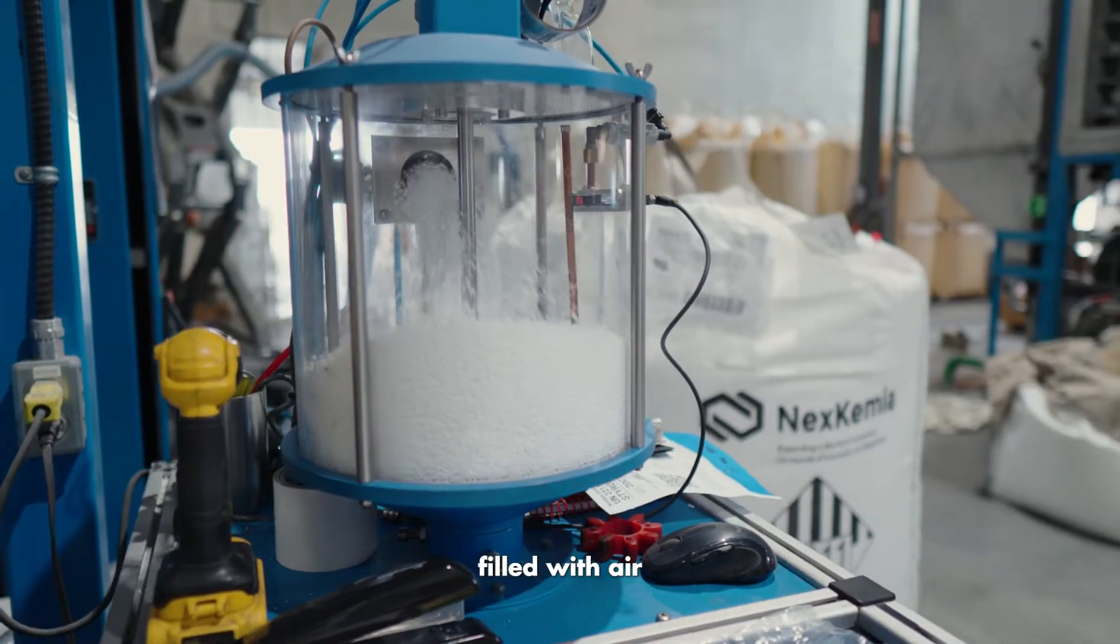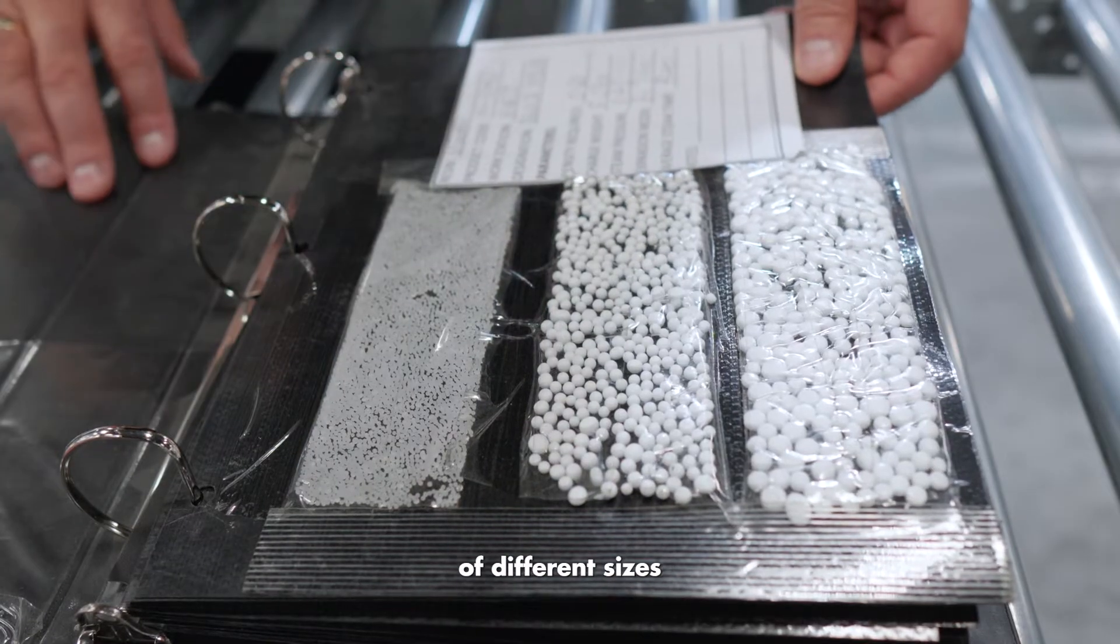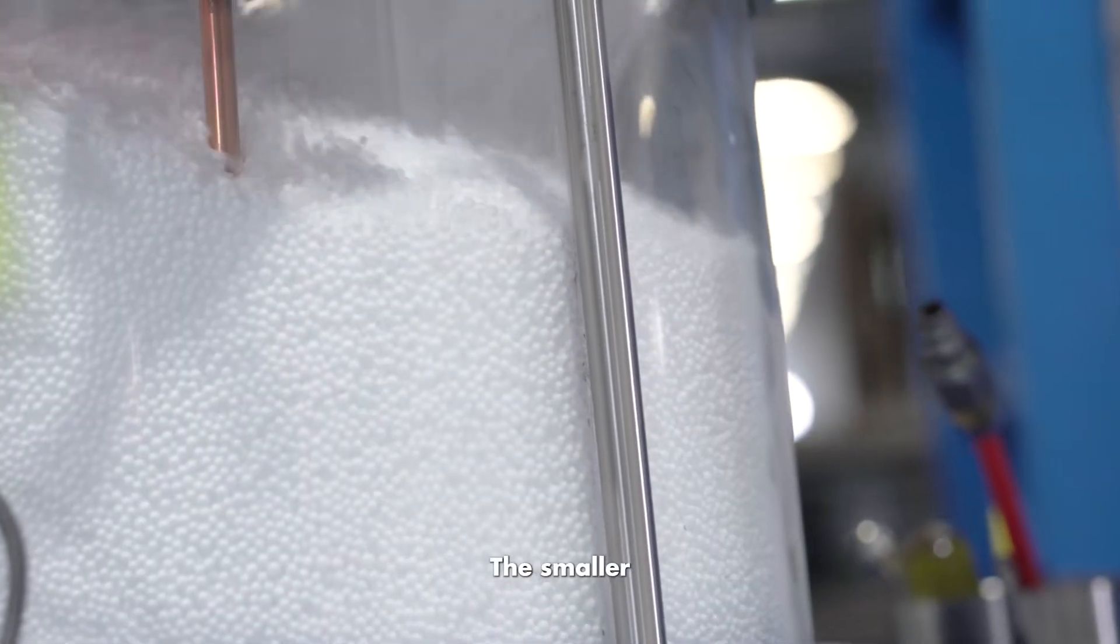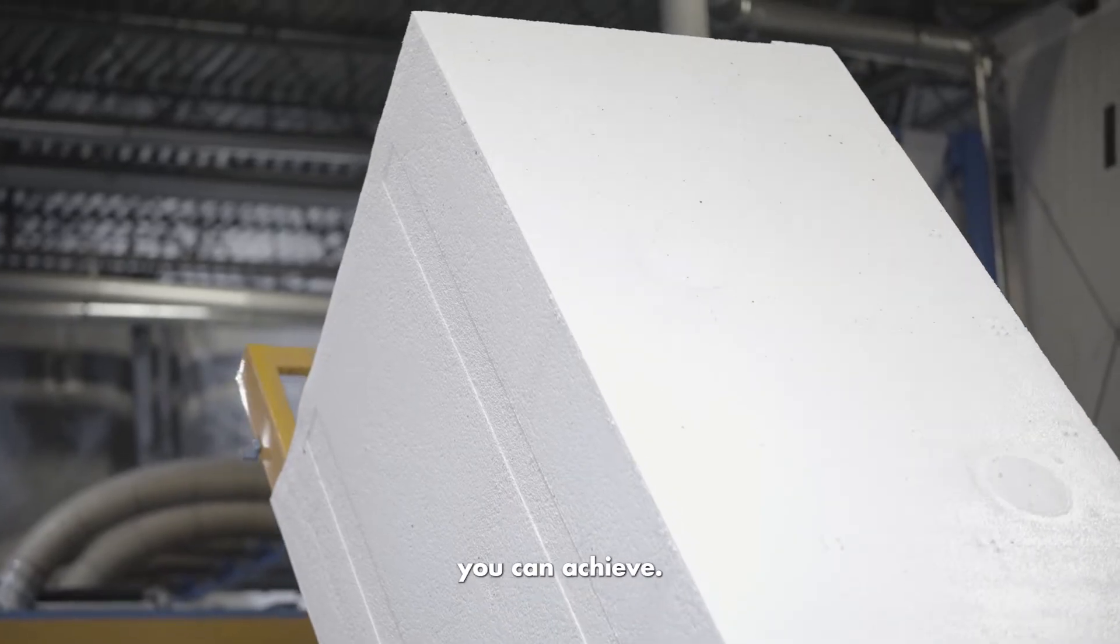This expansion creates beads filled with air, making EPS a great insulator. The beads come in a variety of different sizes and types. The smaller the bead, the higher the density you can achieve. The bigger the bead, the lower the density you can achieve.